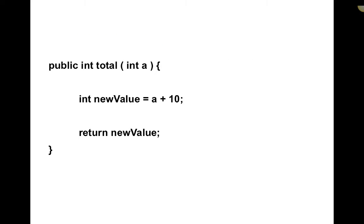In this example we have public int total — a public method that returns an int, is called total, and takes an int a as a parameter. It's going to take in an integer as the parameter and refer to that integer as a throughout the method run. This program creates a new int variable called newValue, adds 10 to the value passed in from the parameter, and then returns newValue from the method when it's done. Parameters have not only a data type — int, double, string, or object — but also a name we refer to locally inside of the method.